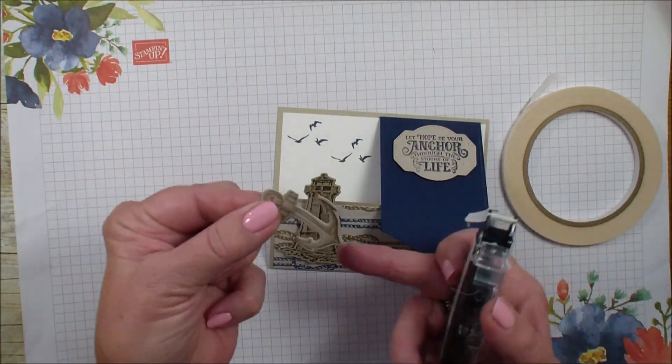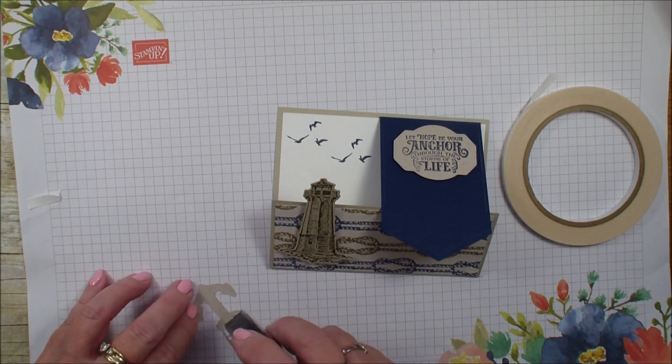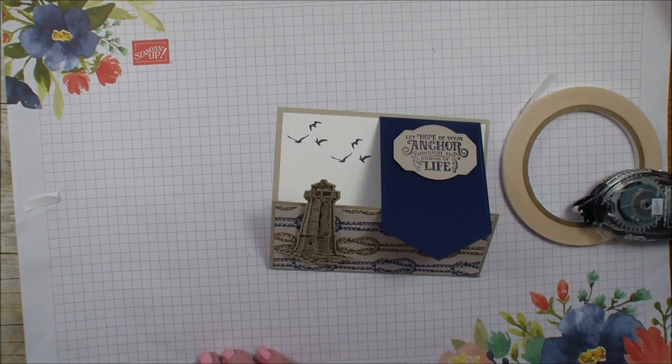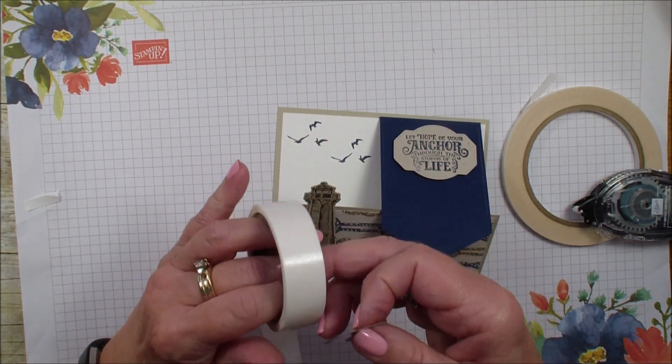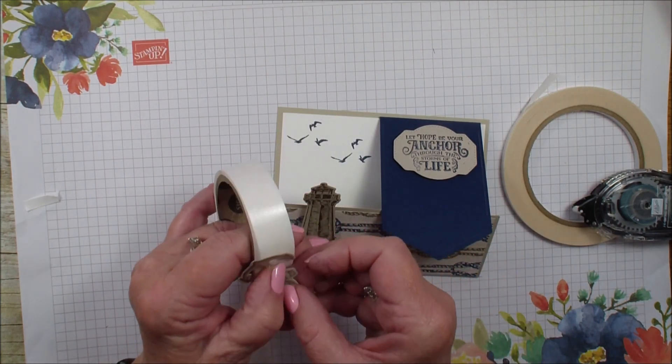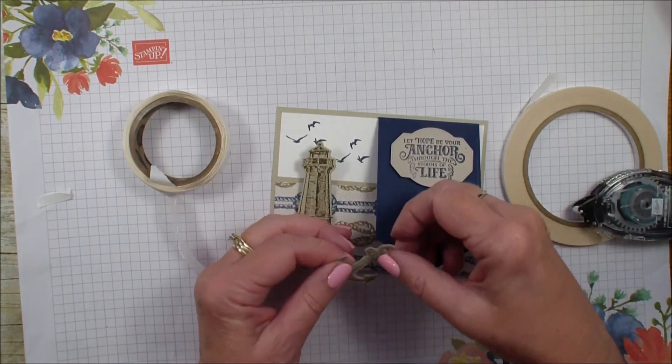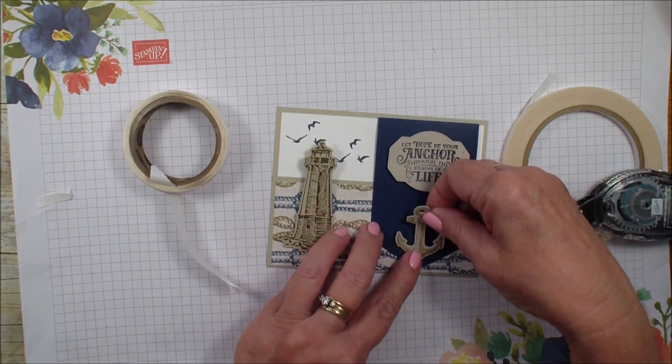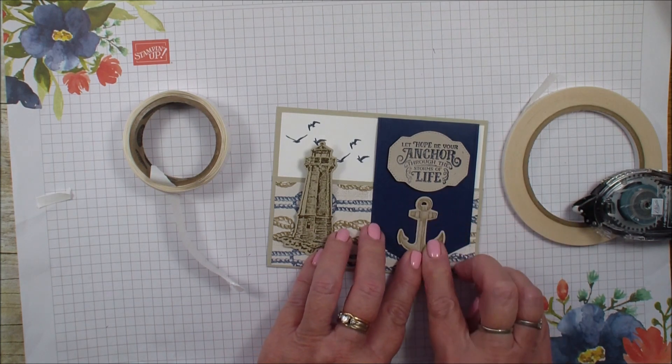We're going to take our anchor. Again I have done all these die cuts. Grab a glue dot. All these die cuts were done with that tip that I shared yesterday with the Stamparatus. I did this card for a swap and it was very easy when you make that template to do several of them. So I'm going to add my anchor right there.